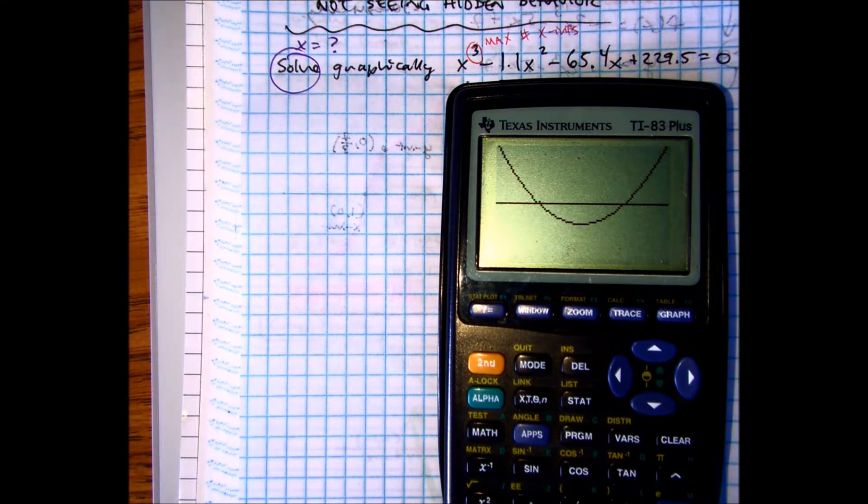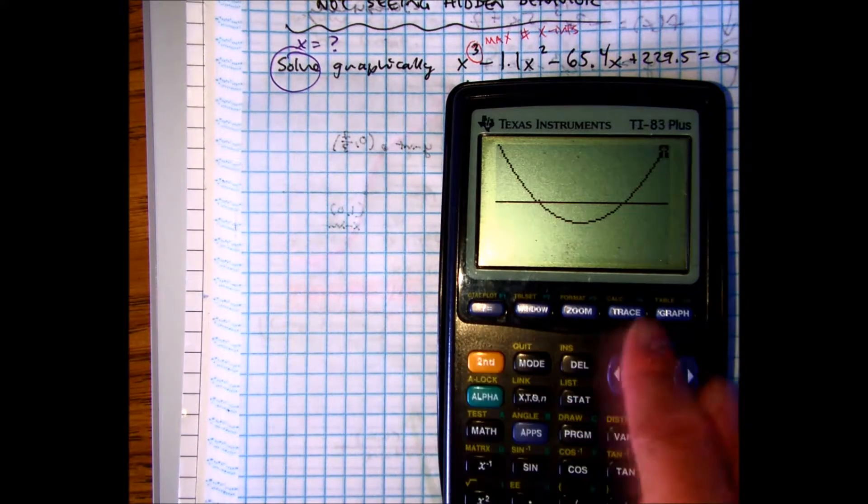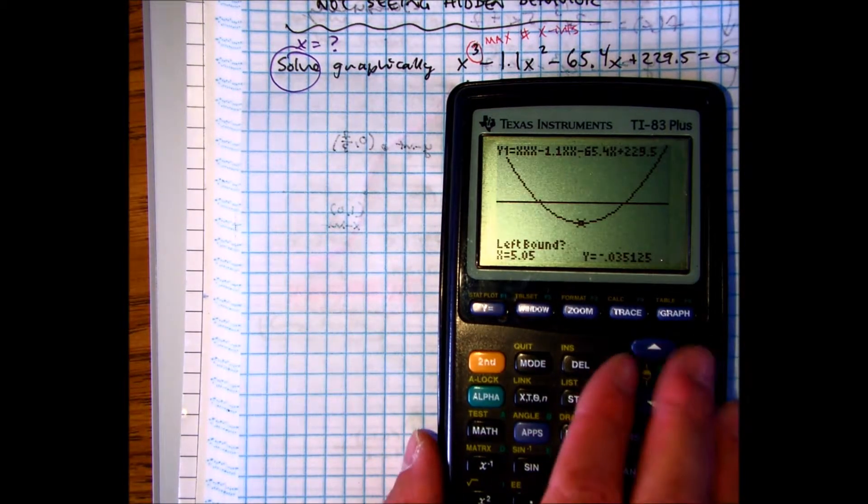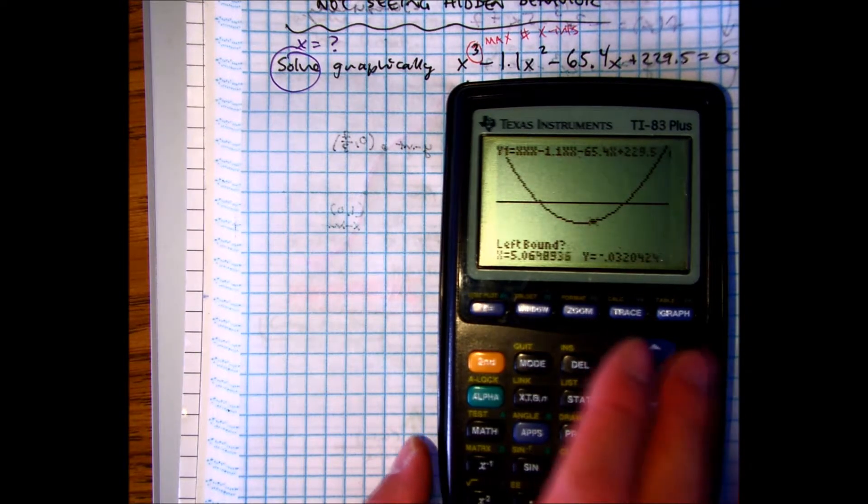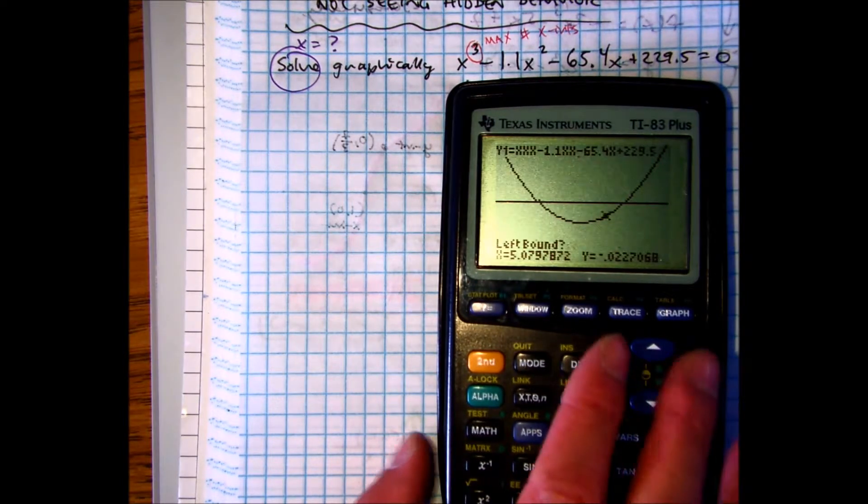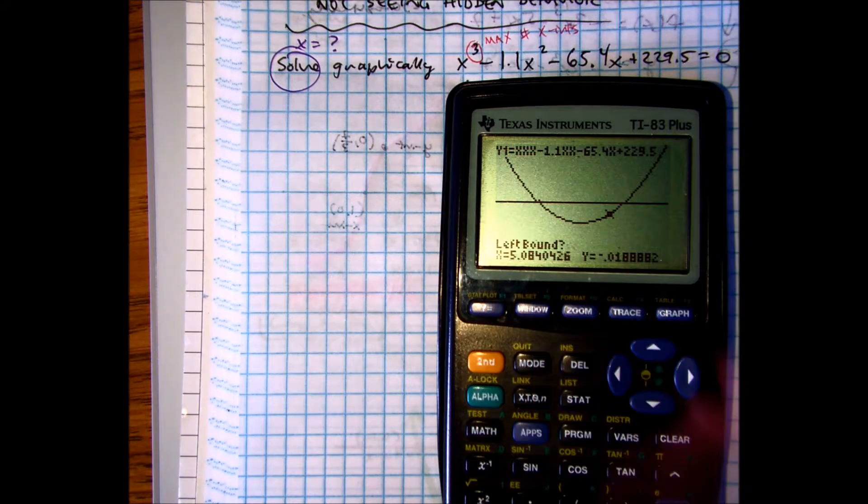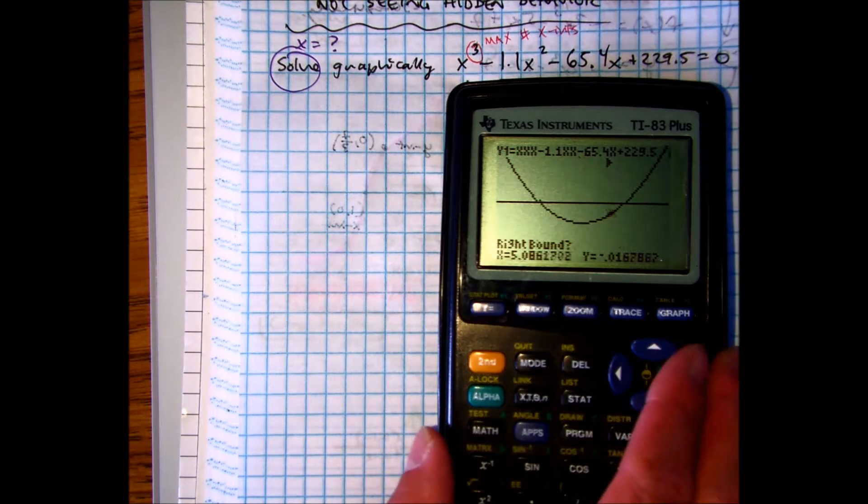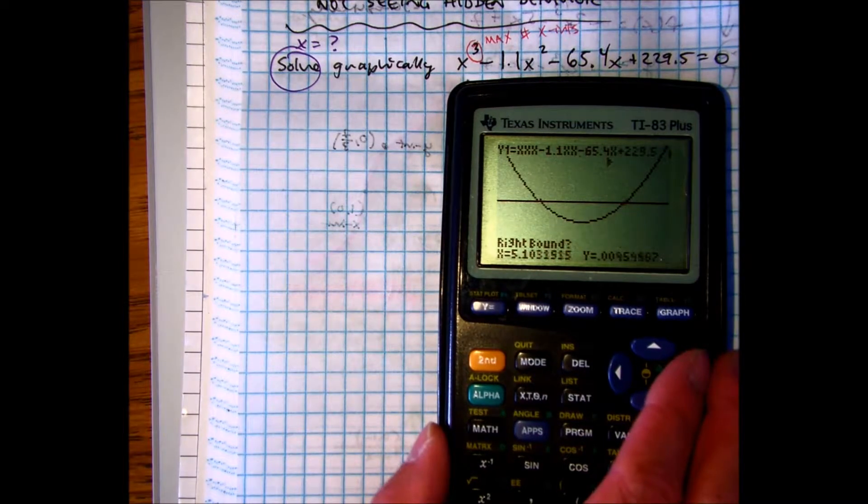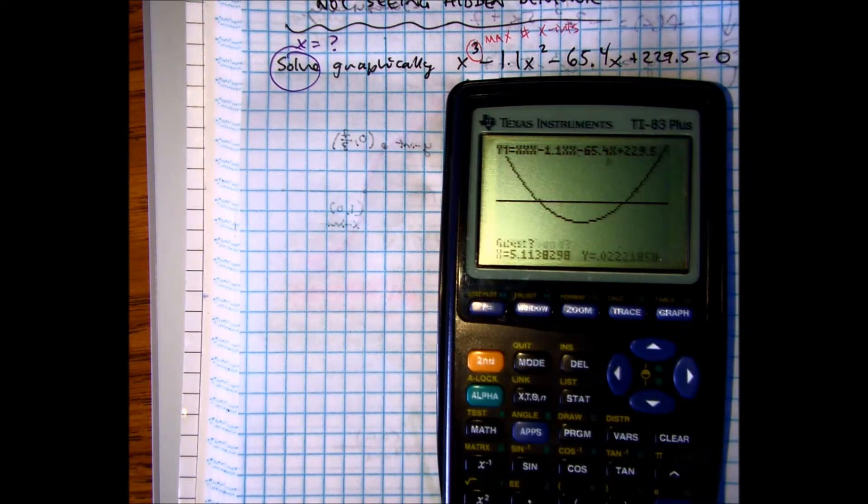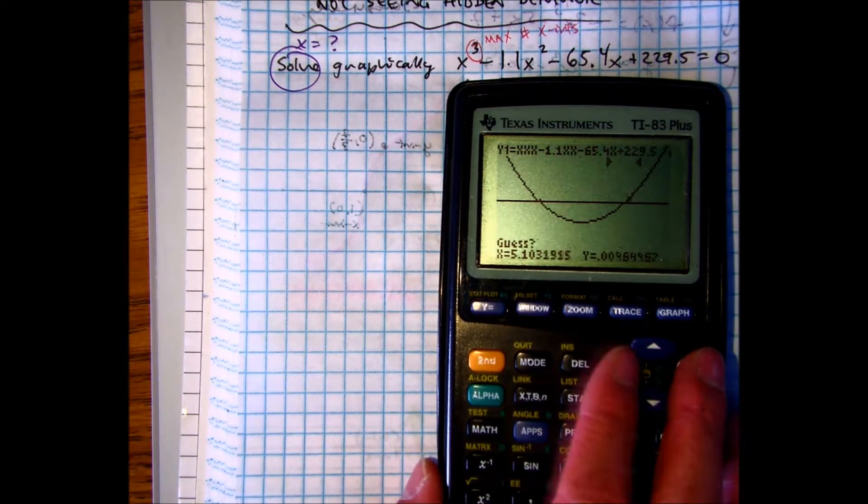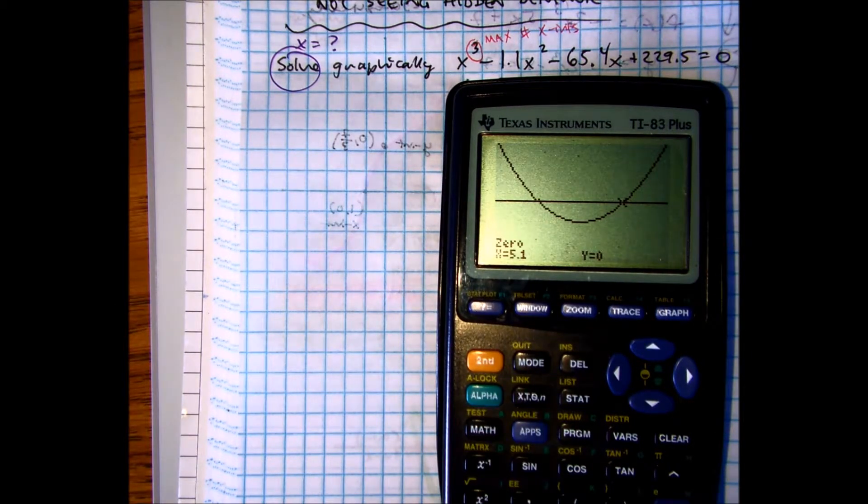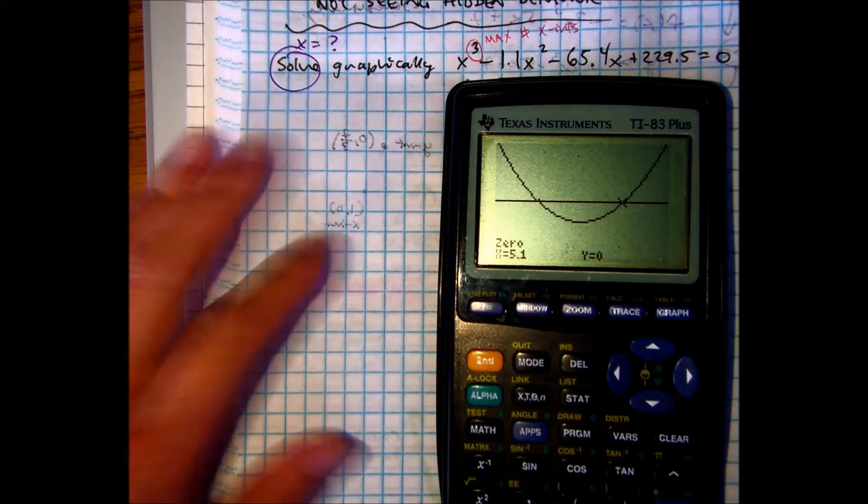Let's go ahead and calculate the x-intercepts. Second, Calculate, Zero. This one says I'm going over here because I'm already left at this point. Left bound, Right bound, Exact. And it tells me one of my zeros is 5.1 comma 0. So I'm going to write that down.